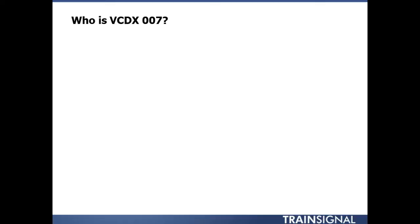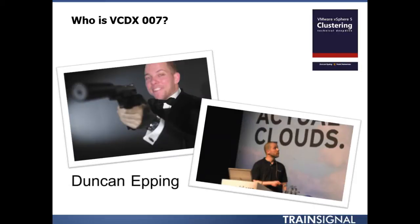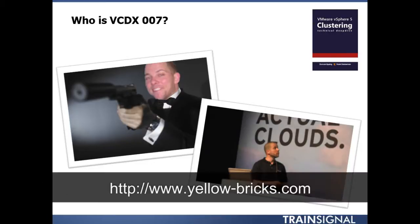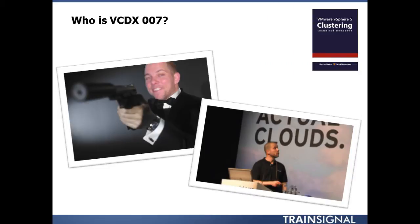Before we end the lesson, one more trivia question: we talked about VCDX number one and VCP number one — if you're a James Bond fan, you might want to know who is VCDX 007. His name is Duncan Epping. Co-authored with Frank Deniman, also a VCDX, their most recent book is 'VMware vSphere 5 Clustering Technical Deep Dive.' Duncan's website is yellow-bricks.com, where he posts fascinating articles on VMware's advanced features. He works for VMware and is a true expert on DRS, high availability, vMotion, storage vMotion, and resource optimization.